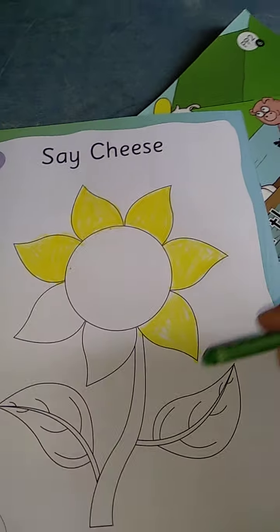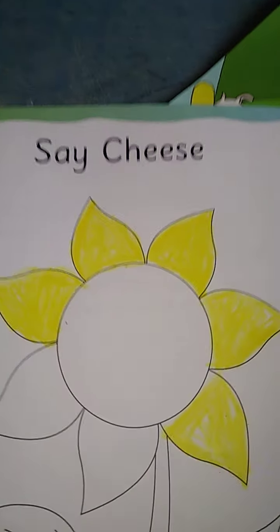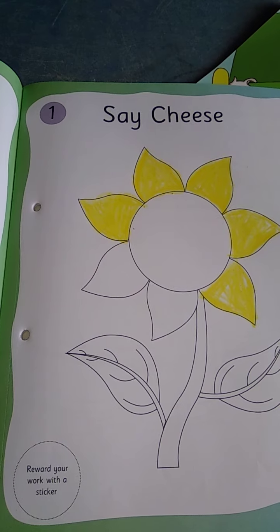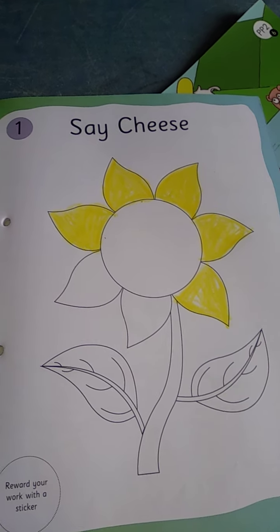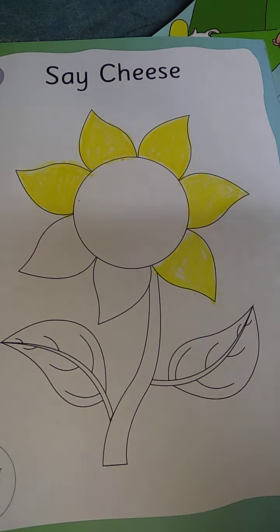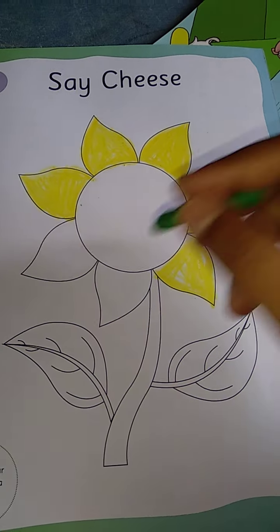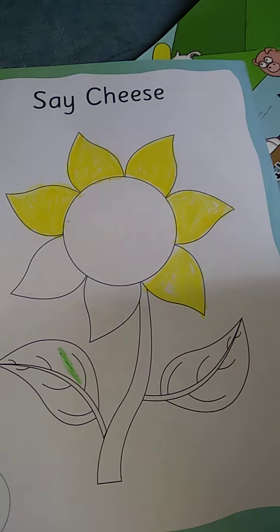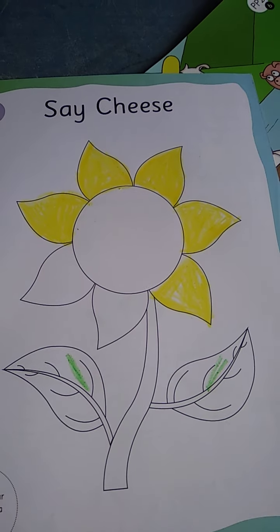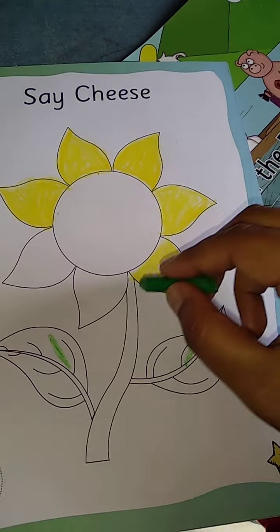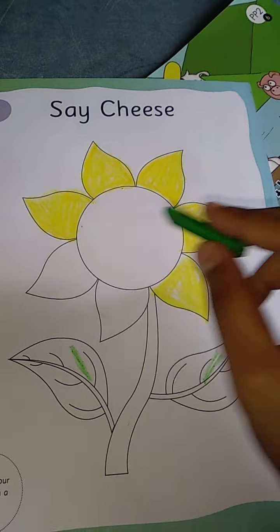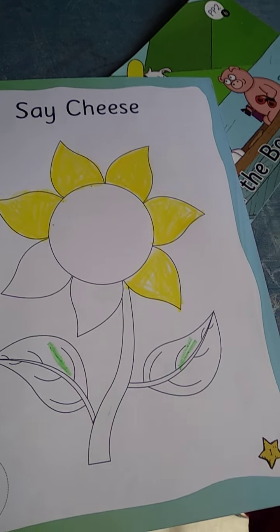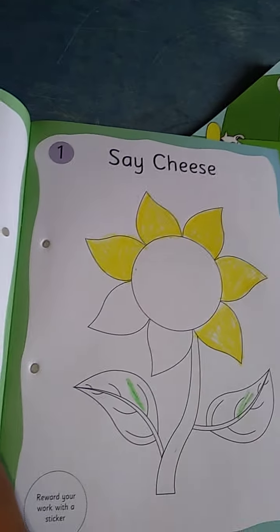Next, it's time to draw the two leaves. So leaves are in which color, children? Leaves are in green color. So for these two leaves, use green color. Draw the green color to the leaves, and for the stem draw brown color.